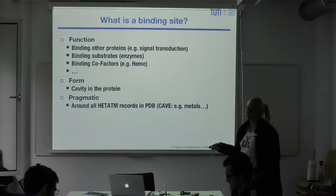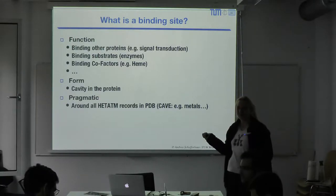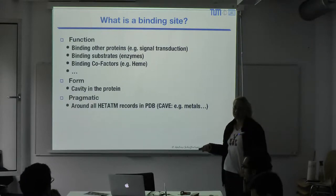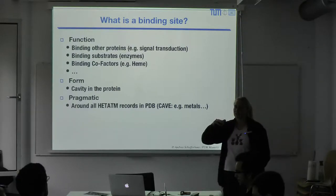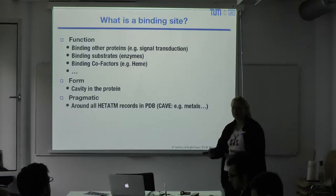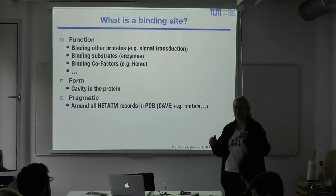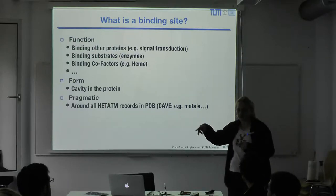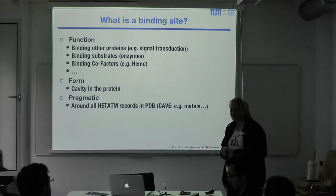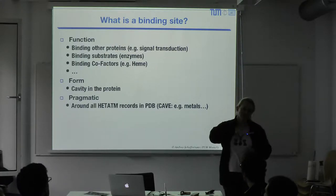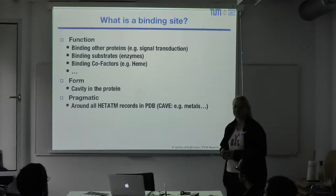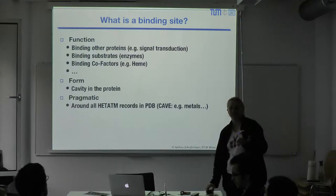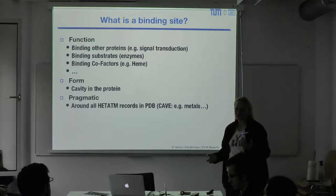When finding binding sites computationally, we use a pragmatic definition: we look at a PDB file. The Protein Data Bank collects all protein structures and distinguishes between natural amino acids — recorded as ATOM records — and non-natural molecules — recorded as HETATM (heteroatom) records. If you look for all the HETATM records in a file and examine the area around them, you usually have the binding site.